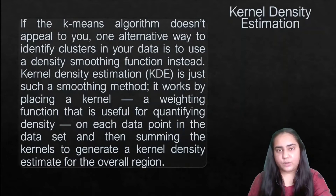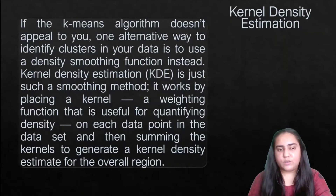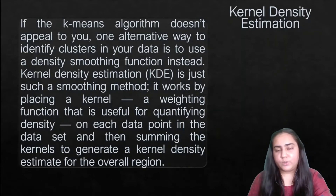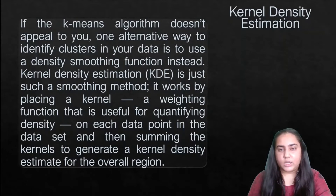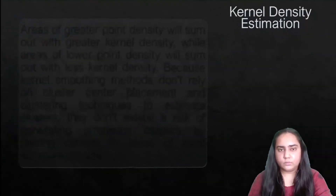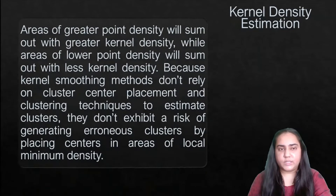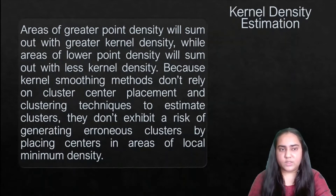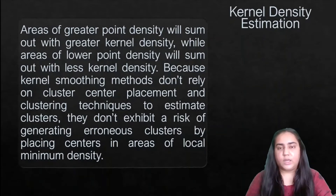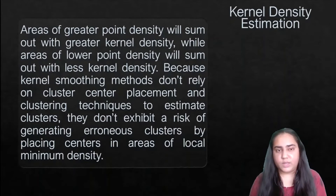Each data point in your plot is summed together to generate a denser and denser kernel, up to a point where you are left with only maybe two or three data points, which are your clusters. Areas of greater point density will sum out with greater kernel density, while areas of lower point density will sum out with less kernel density.